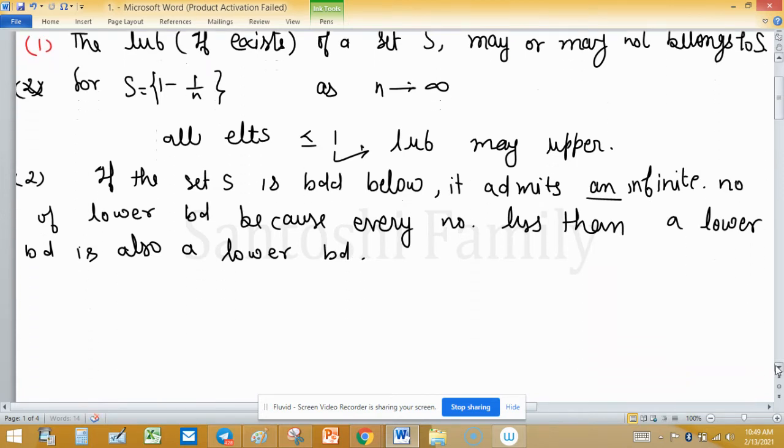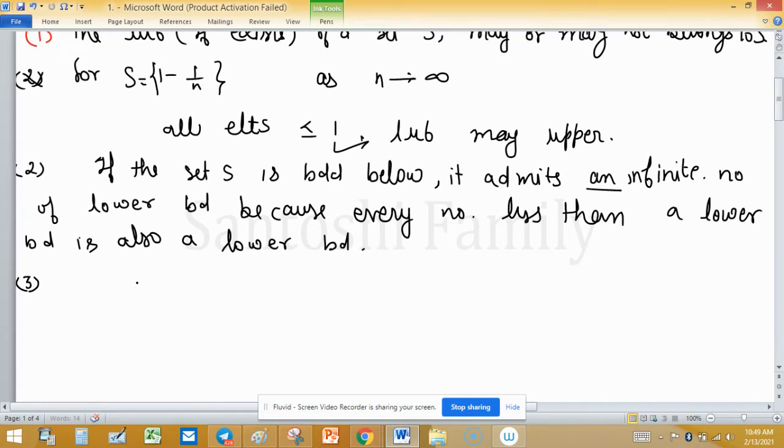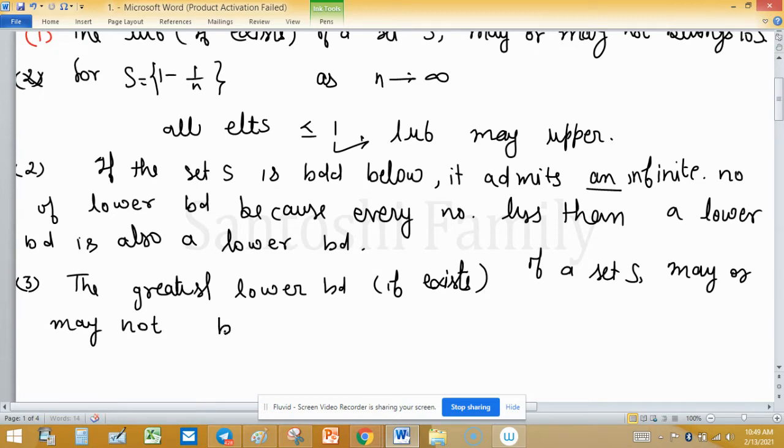Next result is: the greatest lower bound, if it exists of a set S, may or may not belong to S.